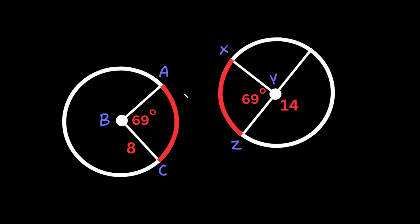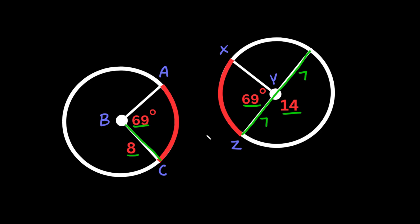Here's the last example. We're checking if these two red arcs are congruent. The first thing that stands out is their angles are the same — both 69 degrees. Now we just need to check if the radii are the same. This radius is given as 8. For the other circle, the diameter is given as 14, so the radius is half of 14, which is 7. So they have the same angle but different radii — 8 versus 7 — meaning these two arcs are not congruent.